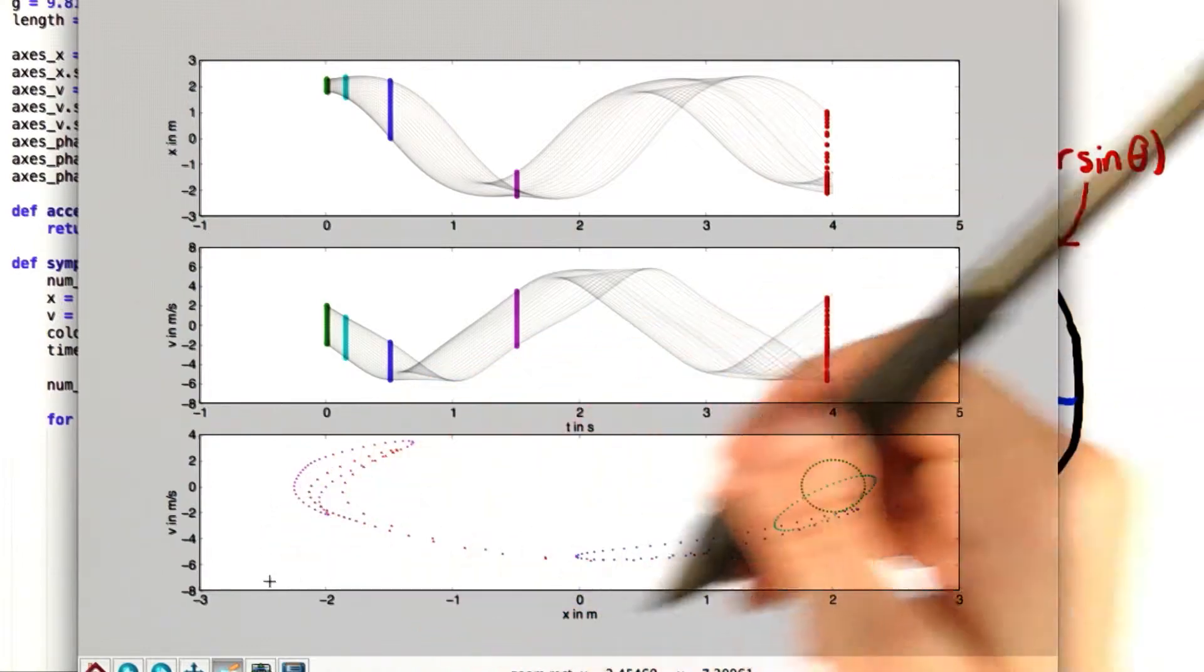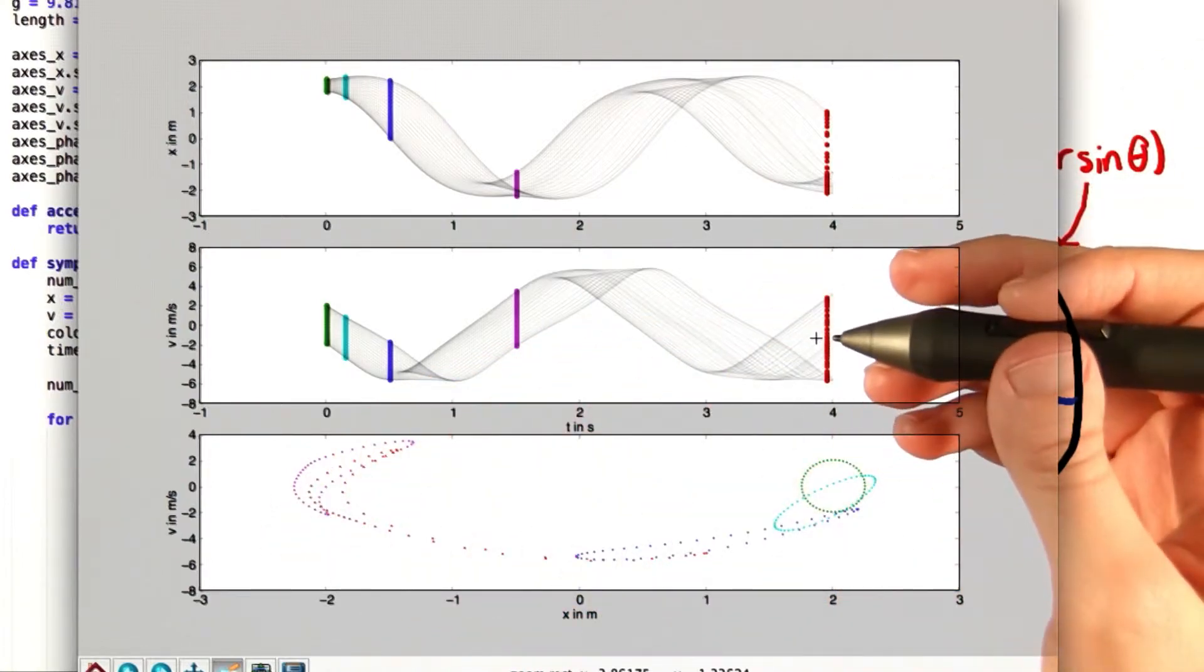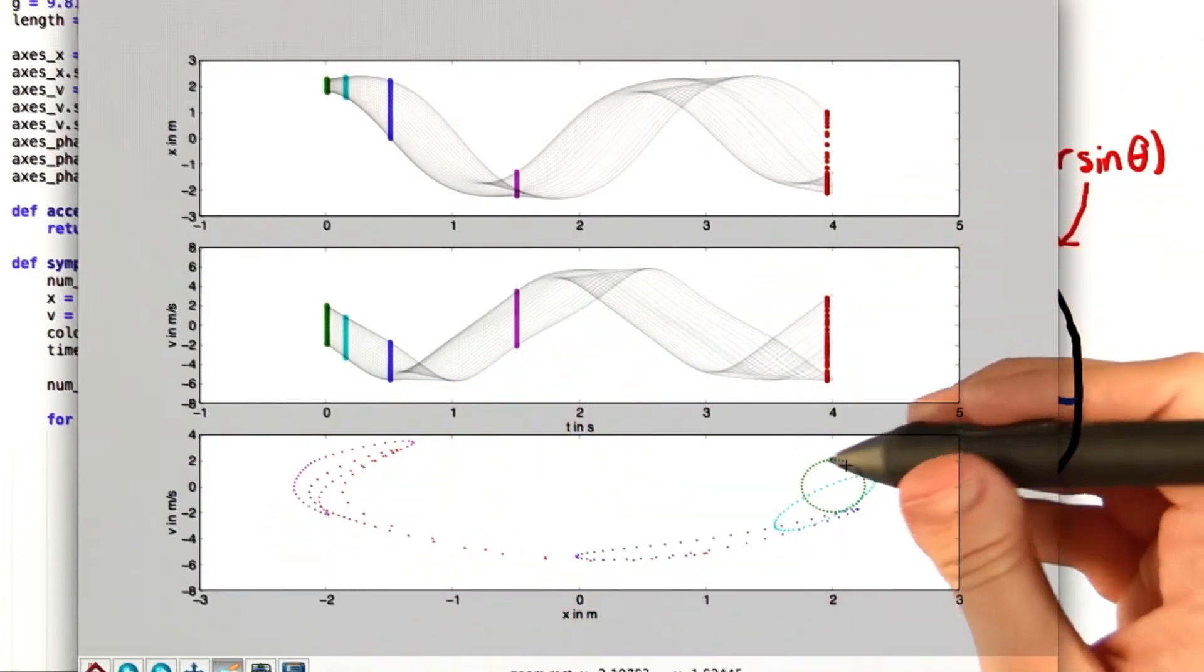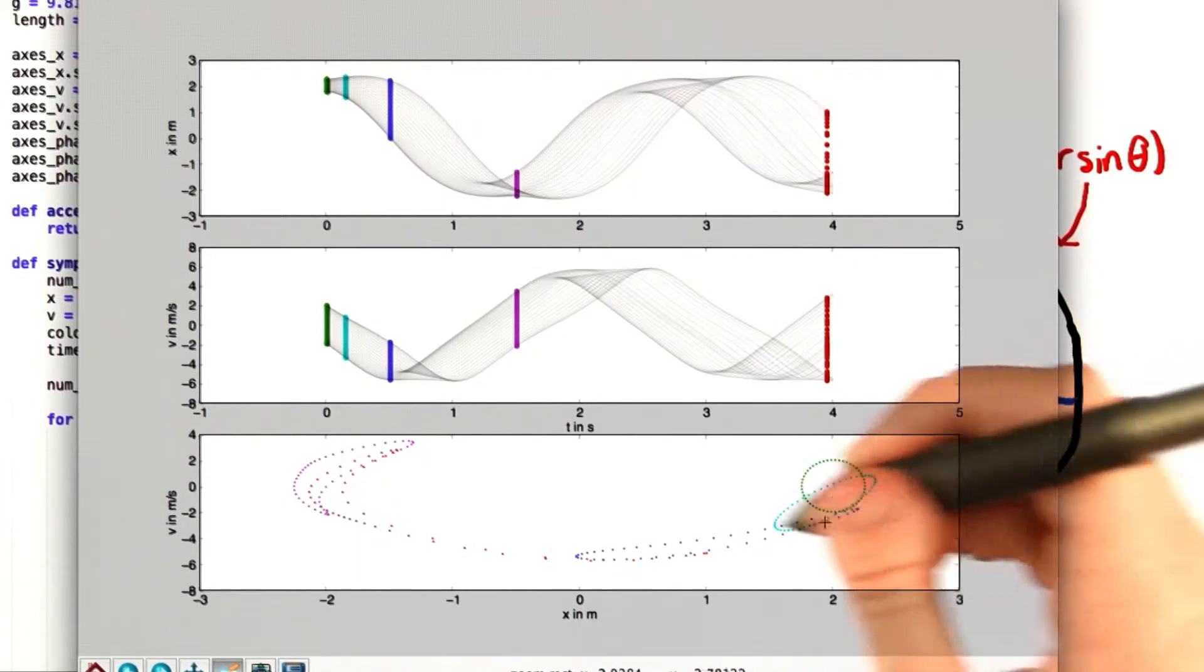So the most important thing to notice about this bottom graph, which like I said earlier represents phase space, is that if we look closely at each one of these ellipses, they all have the same area.